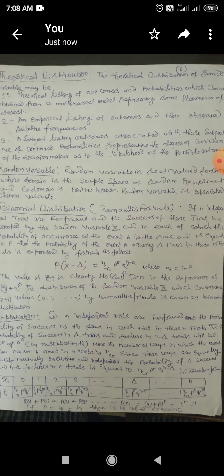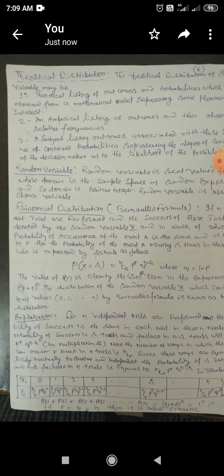Random variable: Random variables are real valued functions whose domain is the sample space of a random experiment and co-domain is the positive. Random variable is also called the chance variable.